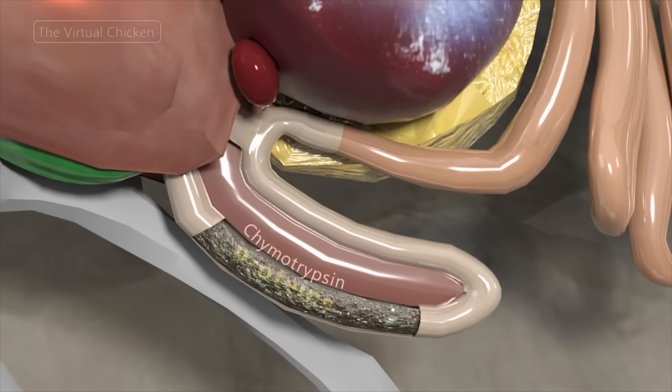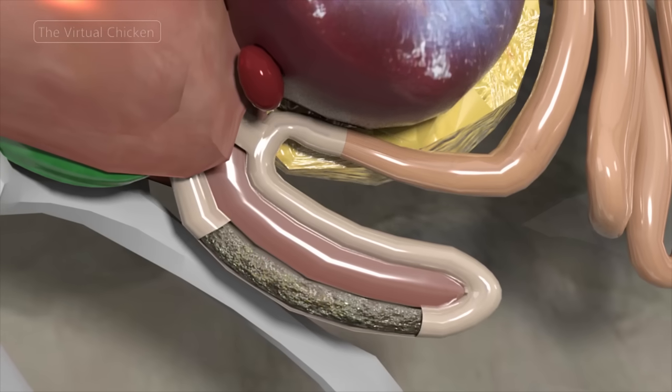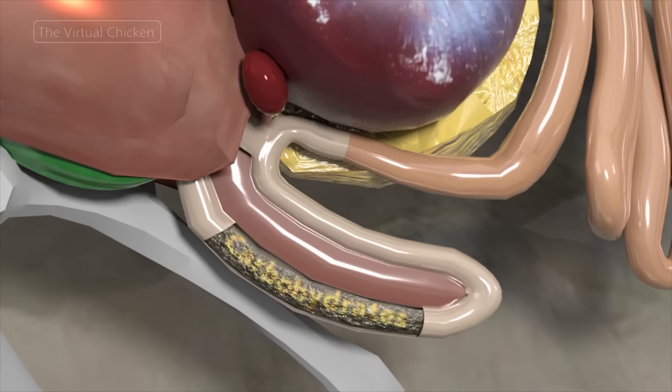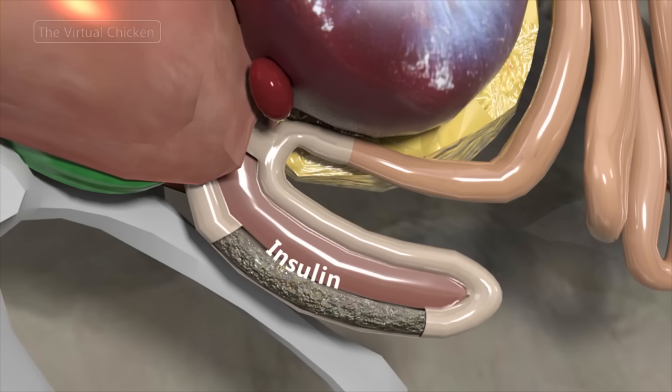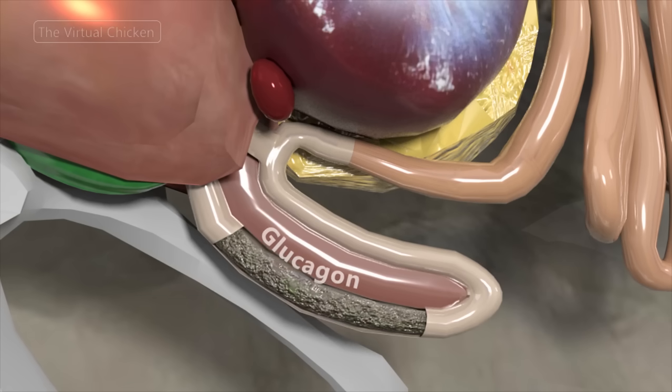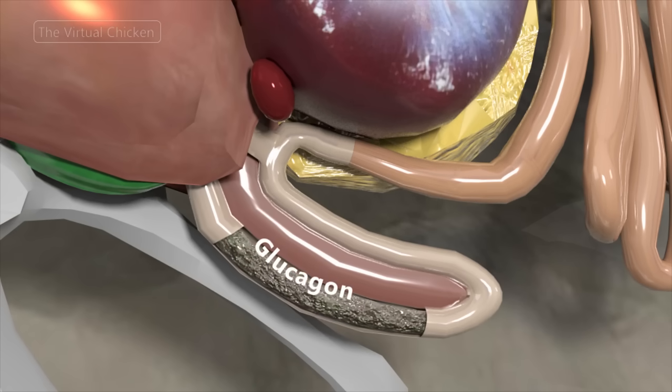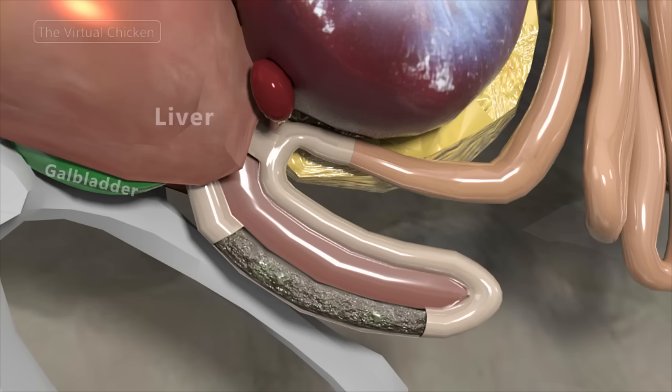The enzymes trypsin and chymotrypsin digest proteins. Amylase breaks down carbohydrates and lipase breaks down fat. Insulin and glucagon, hormones that maintain blood glucose, are also produced in the pancreas. All these combine with bile from the gallbladder in the common bile duct to continue the digestive process.